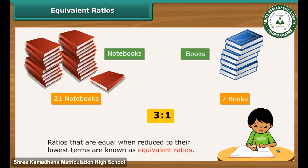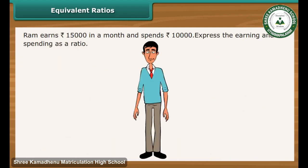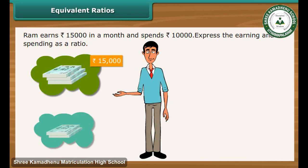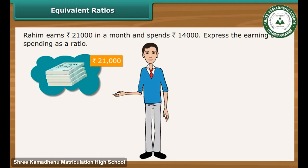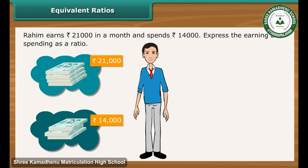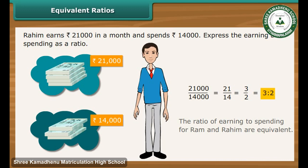Let us verify whether the following ratios are equivalent. Ram earns Rs. 15,000 in a month and spends Rs. 10,000. The ratio 15,000 by 10,000 reduces to 3 by 2, or 3 is to 2 — meaning out of every 3 rupees earned, Ram spends 2. Rahim earns Rs. 21,000 and spends Rs. 14,000. The ratio 21,000 by 14,000 also reduces to 3 is to 2. The ratios for earning to spending for Ram and Rahim are equivalent.